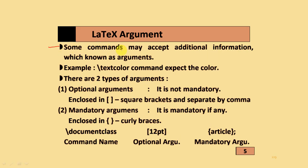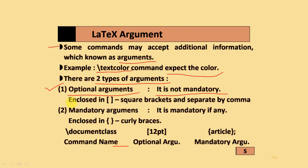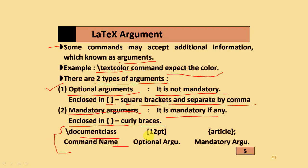Regarding LaTeX arguments: some commands may accept additional information known as arguments. For example, \textcolor expects a color. There are two types of arguments. The first is the optional argument — it is not mandatory and we use square brackets, with values separated by commas. The second is the mandatory argument — it is required and is enclosed in curly brackets. For example, \documentclass[12pt]{article}: here 12pt is the optional argument and article is the mandatory argument.